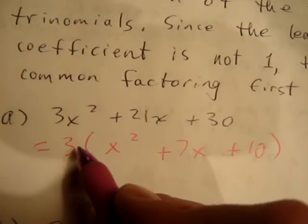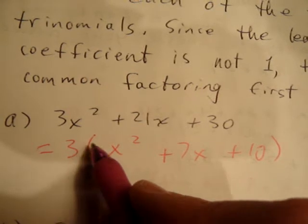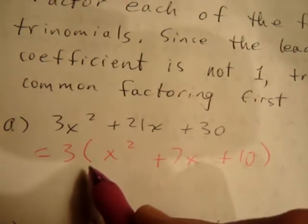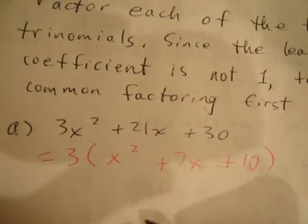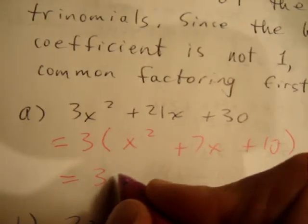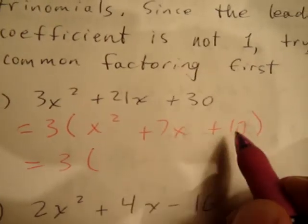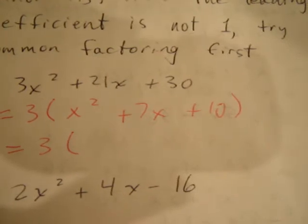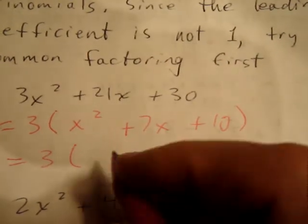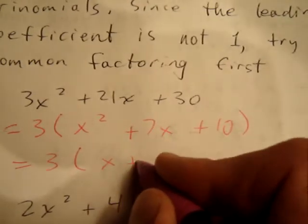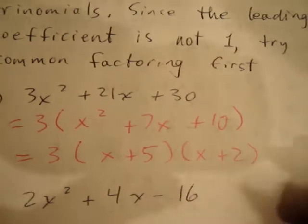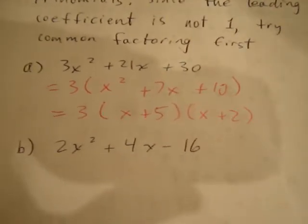We can double-check this by saying, would 3 times x² give me 3x², would 3 times 7x give me 21x, and would 3 times 10 give me 30? The answer is yes. We then use the sum and product method on this trinomial inside, and we see that two numbers that multiply to 10 and add to 7 are 5 and 2. So our answer is 3(x + 5)(x + 2).